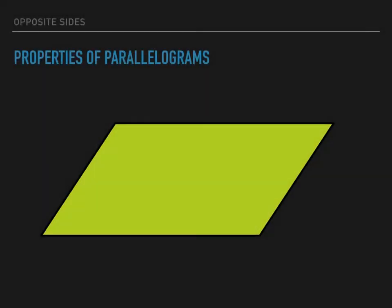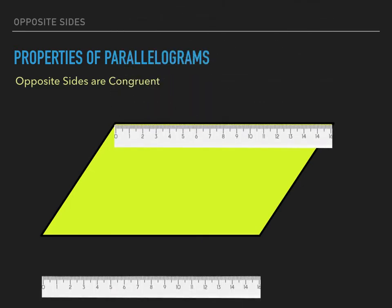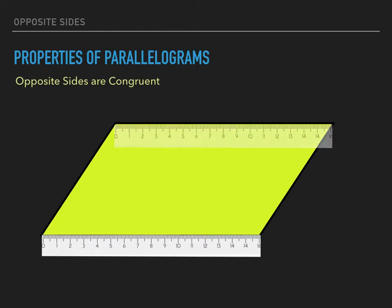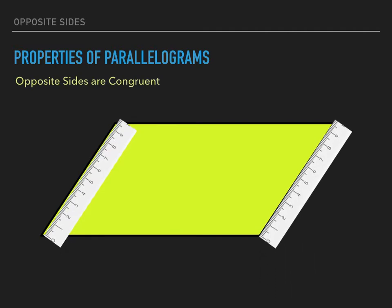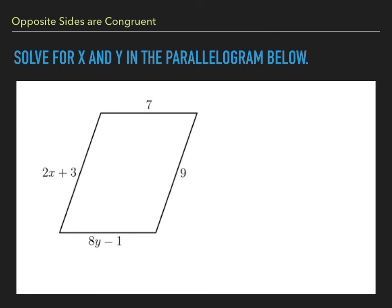Another property of parallelograms has to do with opposite sides: opposite sides are congruent. They are not only parallel but congruent. This side measures 16 units and the side opposite it is also 16 units. The slanted sides are each 9 and a half units. Applying this property: the two slanted sides, 2X plus 3 and 9, are congruent, so we set them equal and solve for X. Similarly, 8Y minus 7 equals 7, giving Y equals 1.